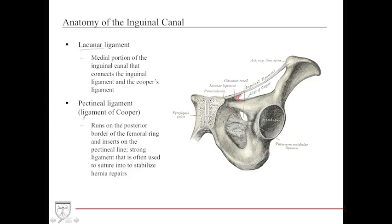Cooper's ligament, also called the pectineal ligament, is located on the bone itself. It runs on the posterior border of the femoral ring and inserts onto the pectineal line. This structure is very important during surgery because it is very strong and durable — surgeons will often suture into Cooper's ligament to help stabilize a hernia repair.